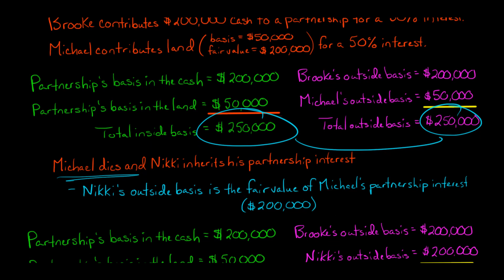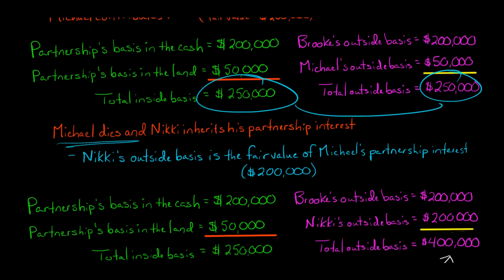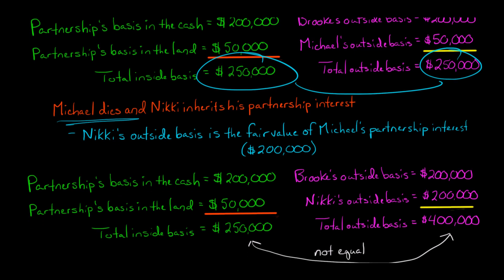Michael's outside basis had just been $50,000, but Nicky's outside basis in the partnership interest she is receiving by inheritance is going to be the fair value. So $200,000 is Nicky's outside basis.